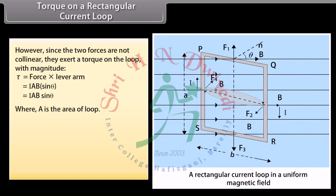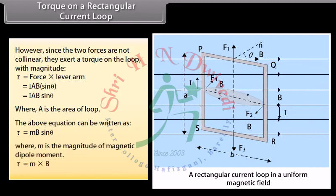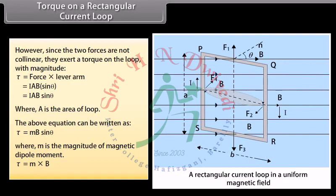Where A is the area of the loop. The torque equation can be written as tau = NB sin theta, where M is the magnitude of magnetic dipole moment. Thus, tau equals the cross product of M and B.